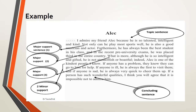The minor support sentences develop the ideas which appear in the major support sentences, and they help them to develop the main idea. It is necessary to have a sufficient number of major support sentences. We cannot have a paragraph with a topic sentence plus one major support sentence — this is not enough.